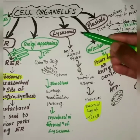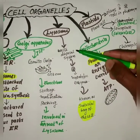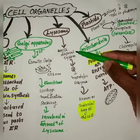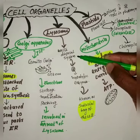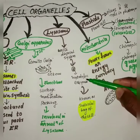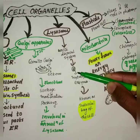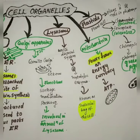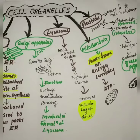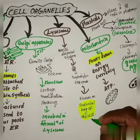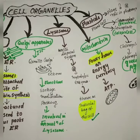The next cell organelle is the lysosome, also known as the waste disposal system of the cell, because it contains hydrolytic enzymes inside it. When a foreign particle enters the cell or the cell gets damaged, the lysosome may burst and the enzymes digest the cell's own contents. Therefore, it is also known as the suicidal bag of the cell.